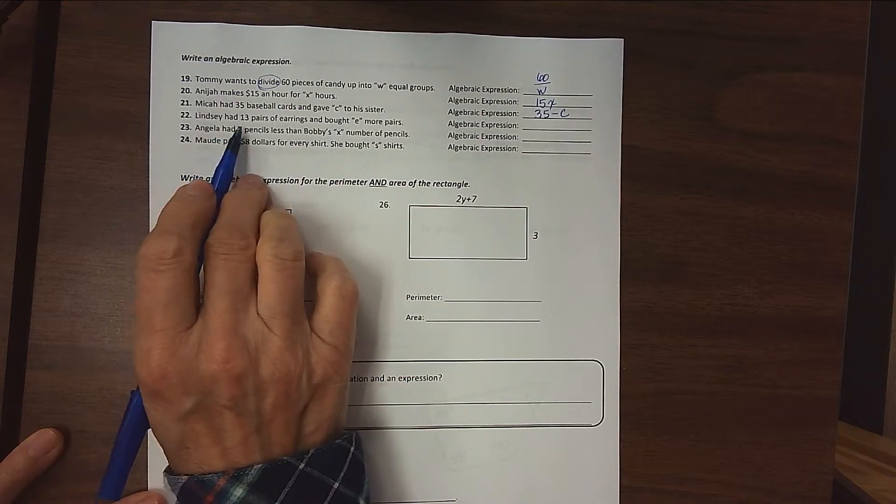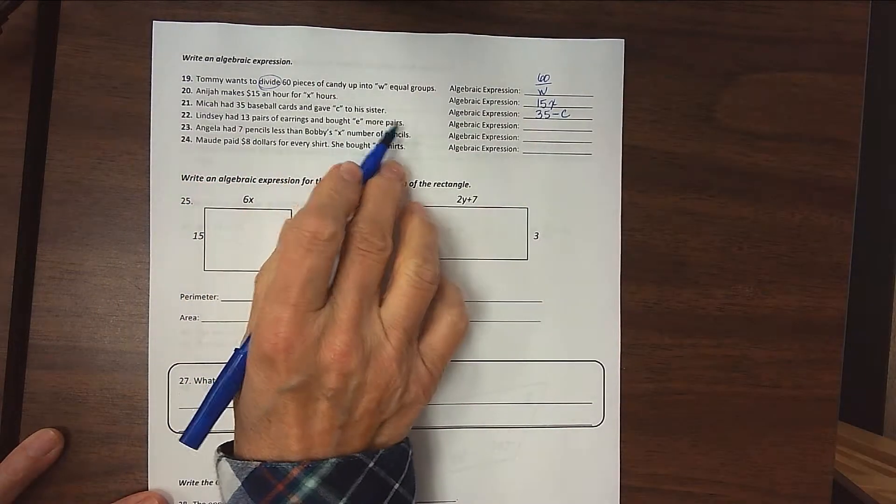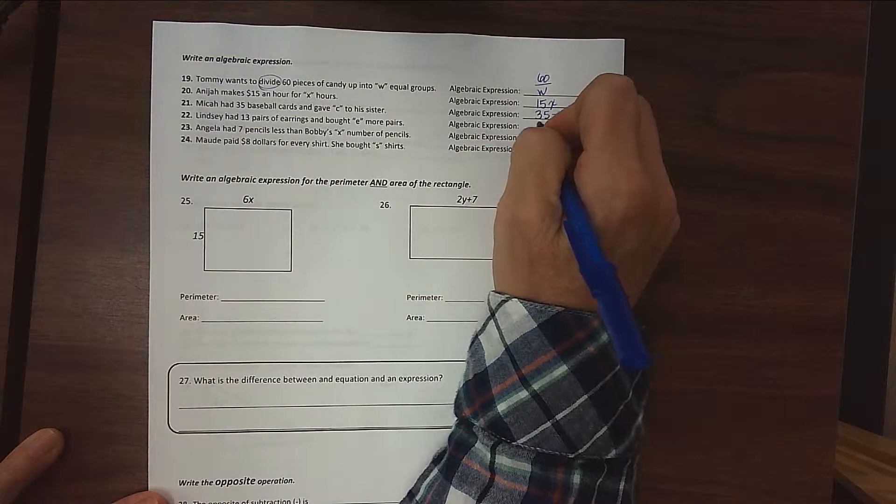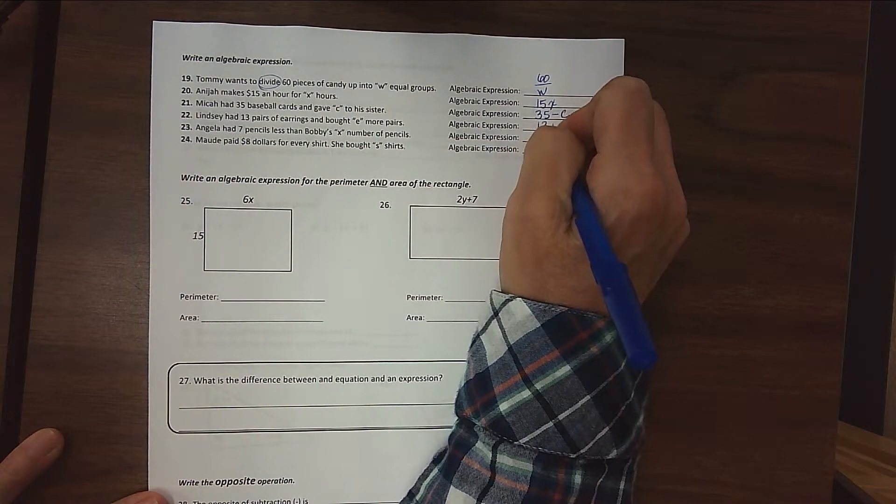Lindsay had 13 pairs of earrings and bought E more pairs. So she started with 13, she bought E more pairs. That's an addition problem, 13 plus E.